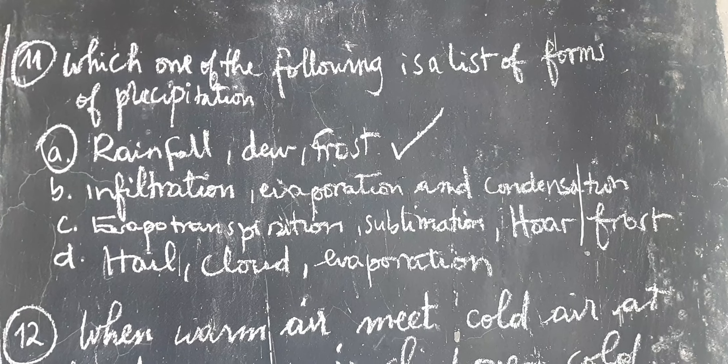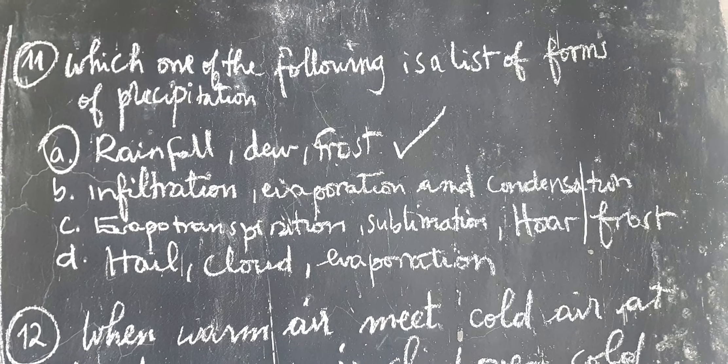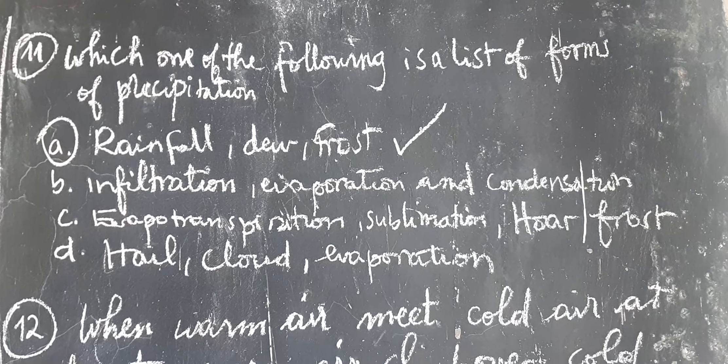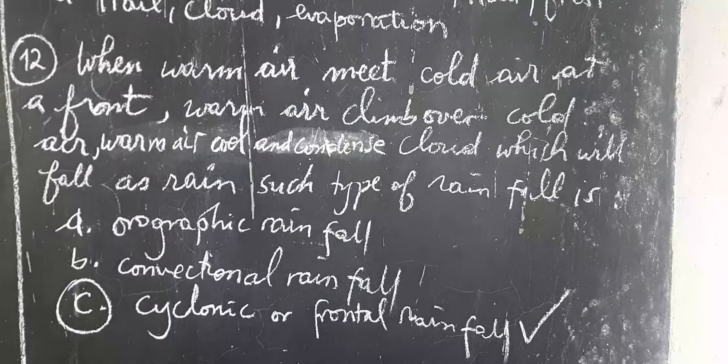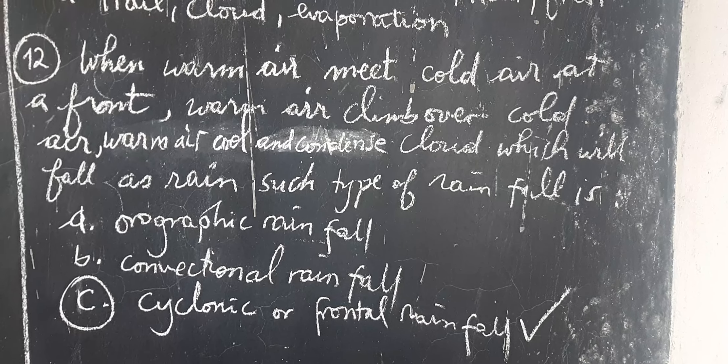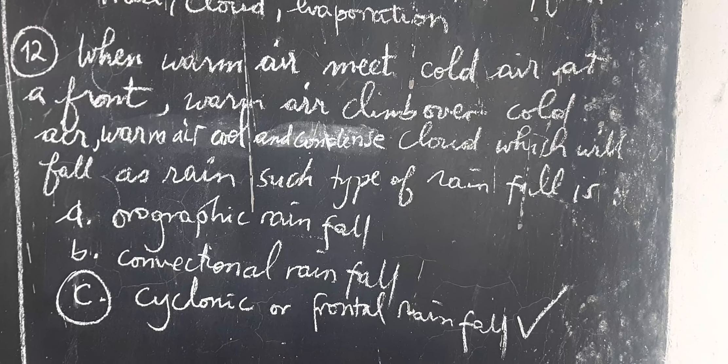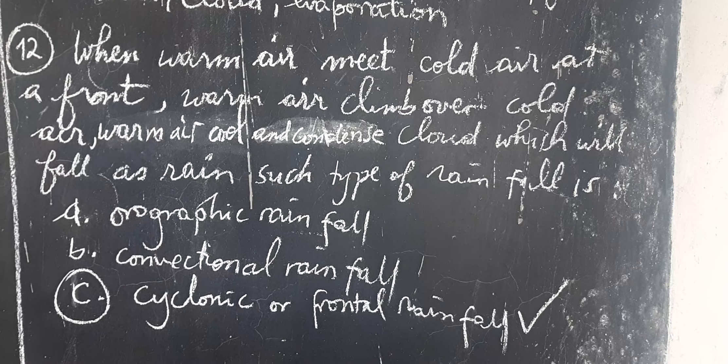When you go to option B, infiltration, evaporation, and condensation are processes of the water cycle, not forms of precipitation. Therefore, the correct answer is A.